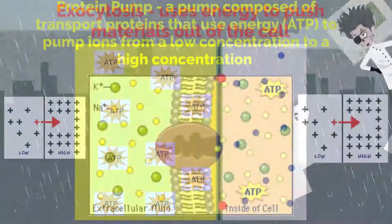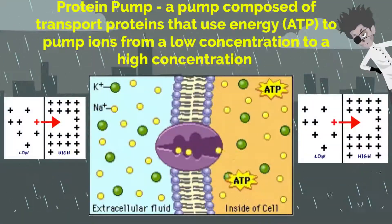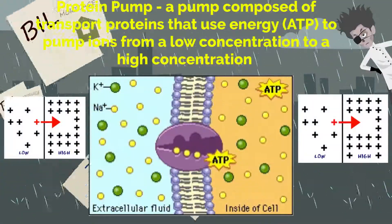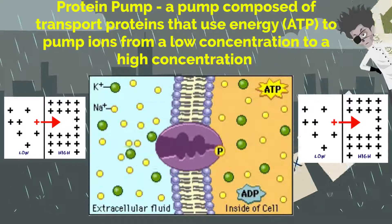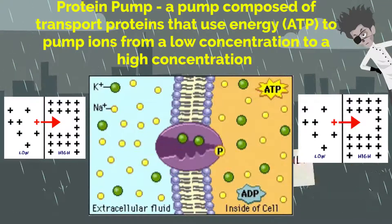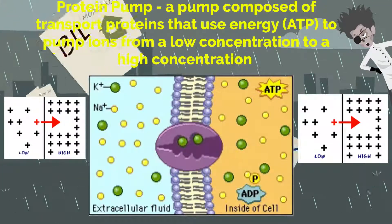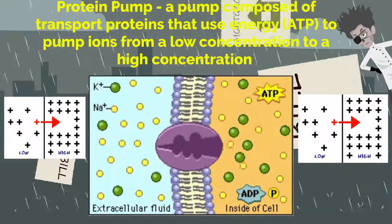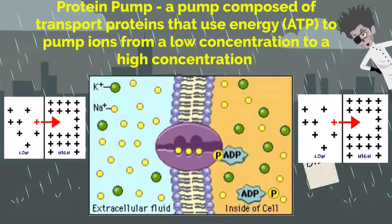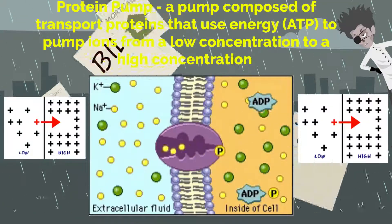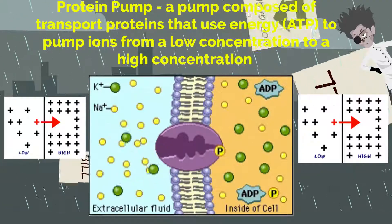With protein pumps, a pump composed of transport proteins uses energy in the form of ATP to pump ions from a low concentration to a high concentration.